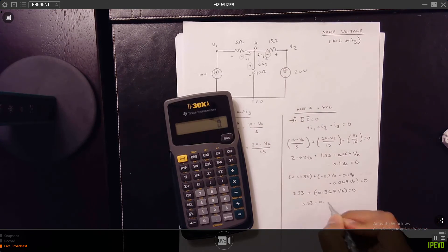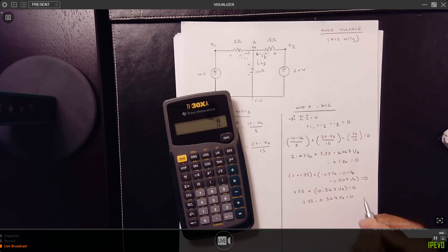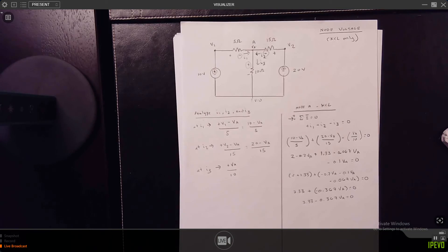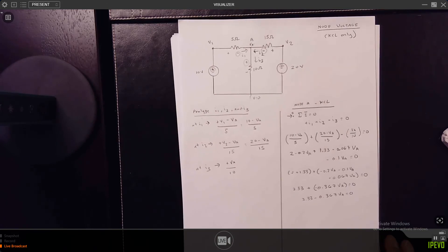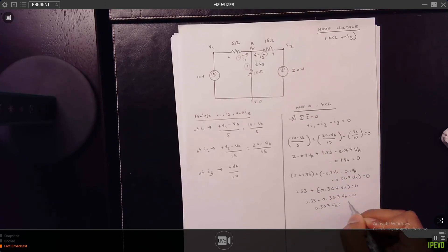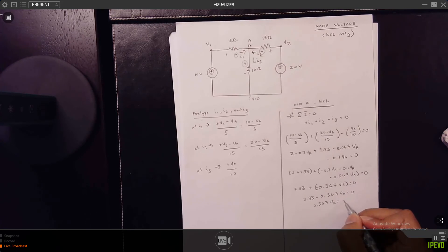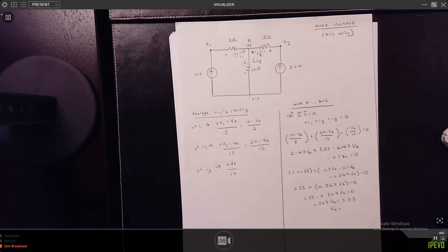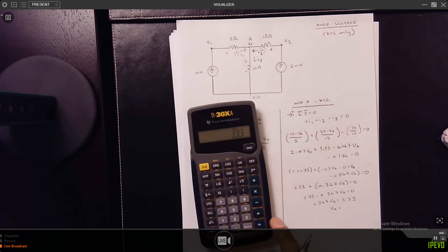Otherwise I'll probably skip a lot more steps. But just to help you go over the math nuances, VA is equal to 3.33 divided by 0.367, which is 9.07. So VA is 9.07 volts.